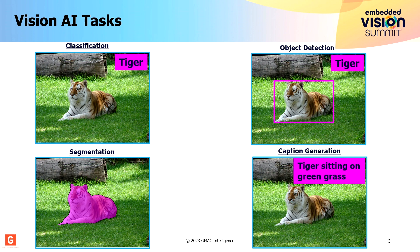In case of caption generation, you analyze all the pixels and come up with a generated text line explaining what is happening — in this case, it's saying a tiger is sitting on green grass. As you can see, the complexity of the task increases as you move from classification to object detection to segmentation, and some of the parts may be reused.